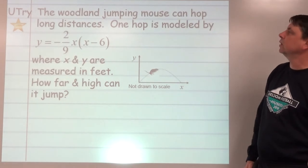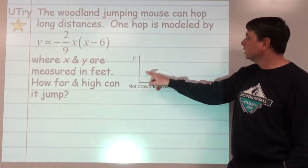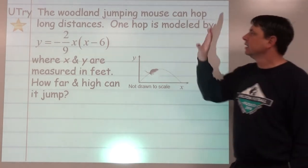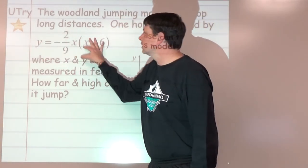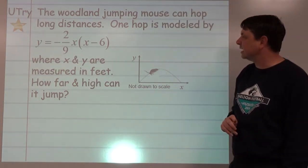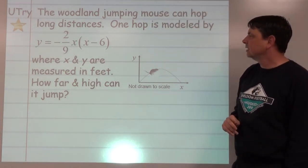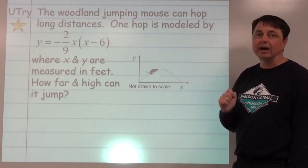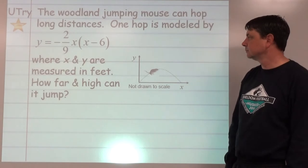You try this one. Talking about the woodland jumping mouse that can hop very long distances. This path is given by the function y equals negative 2/9 x times (x minus 6), where x and y are measured in feet. How far can it jump? How high can it jump? Go ahead and pause here as you think about it.